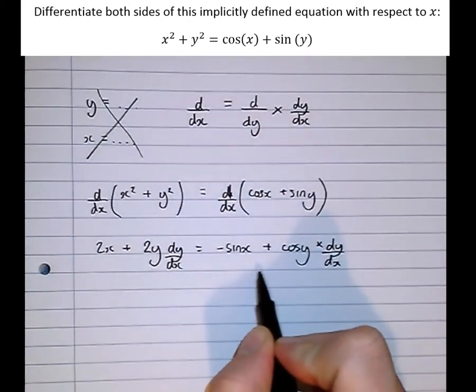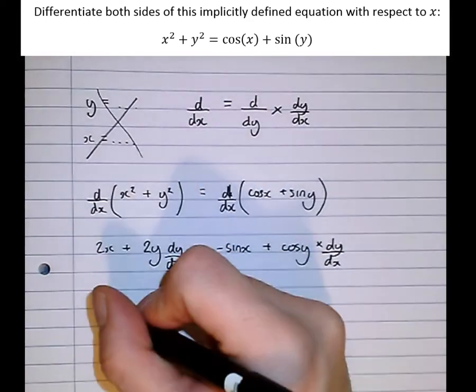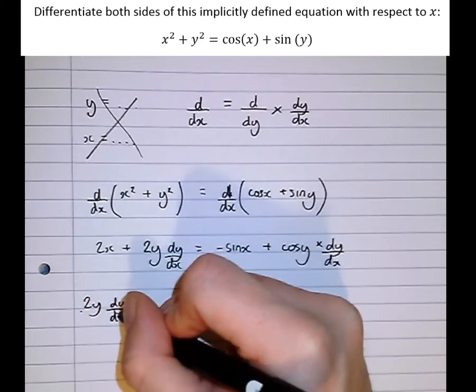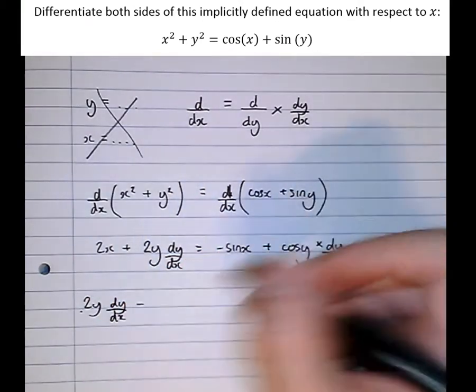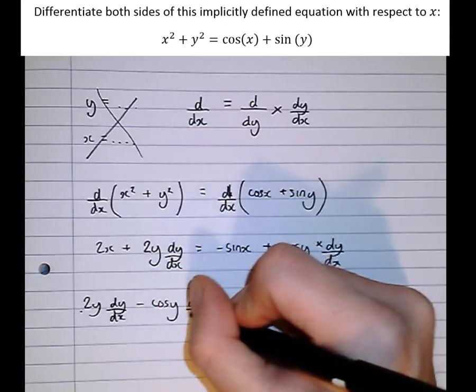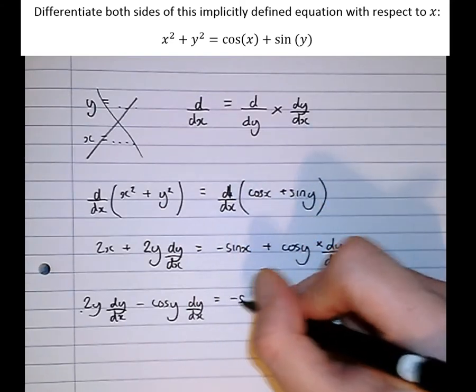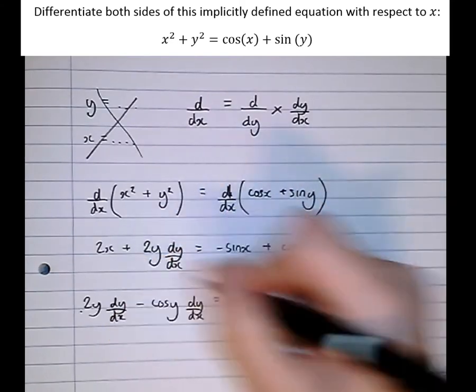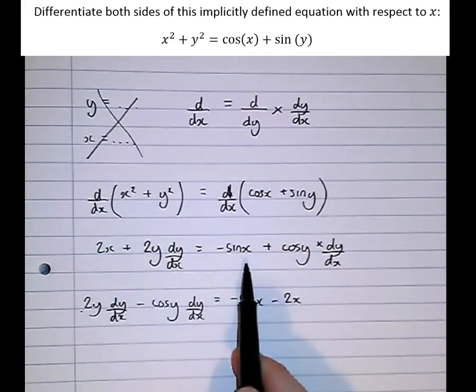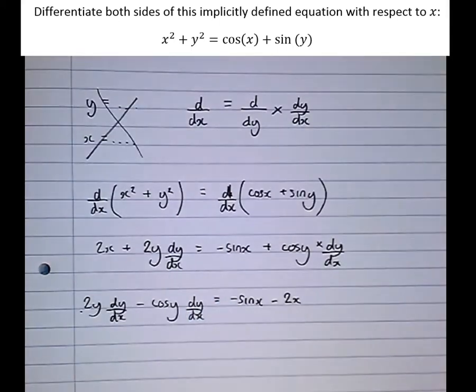So now let's get all the dy/dx's on one side, and all the non-dy/dx's on the other. So we get 2y dy/dx take cos(y) dy/dx equals minus sin(x) minus 2x. So I've taken all the non-dy/dx terms to the right-hand side, and all the dy/dx terms to the left-hand side.